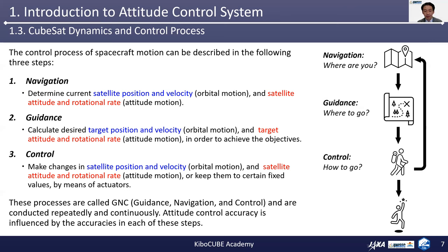These three important steps — GNC: guidance, navigation, and control — are processes which need to be conducted repeatedly and continuously. The resulting control accuracy is influenced by the accuracy in each of these steps.